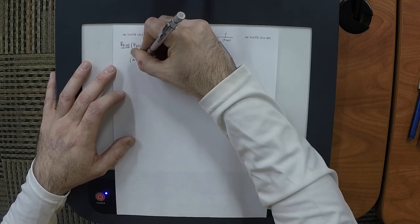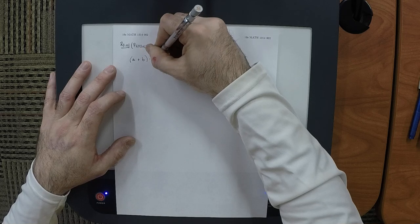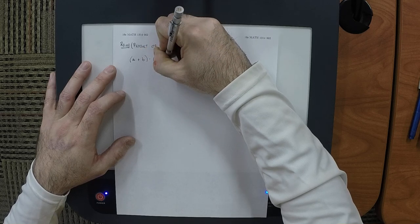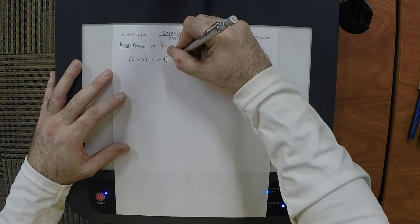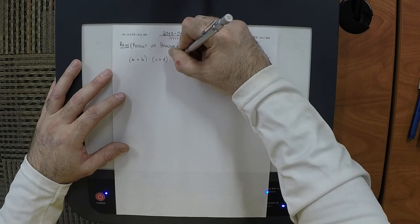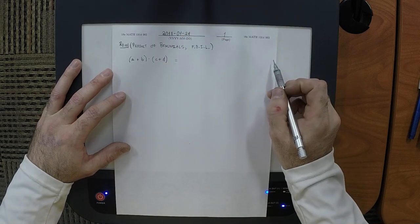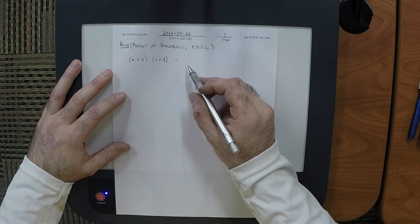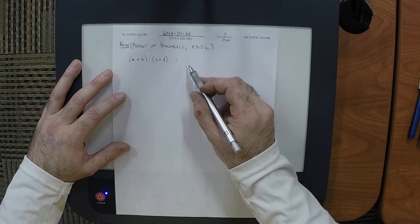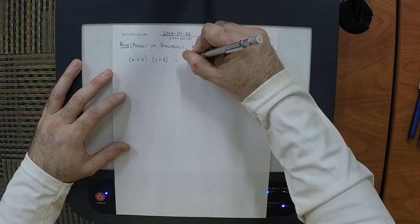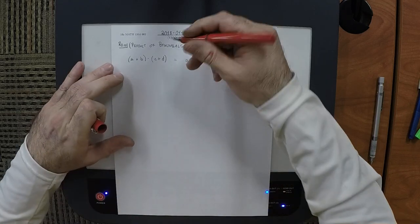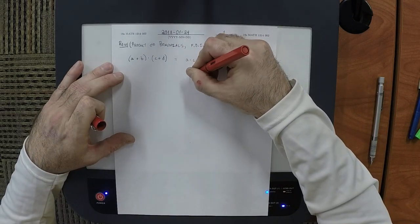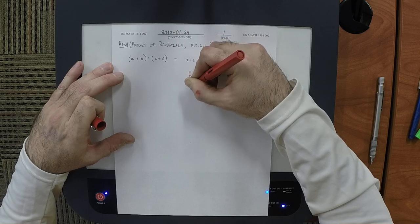We write down: A plus B, multiplied by C plus D. We went over how to get the formula last time, so I won't repeat that, but I will repeat the formula. It's the sum of four terms. What's the name of the first term? First — the F term. And what are its factors? AC. This is called the F term because these are the ones that appear first.